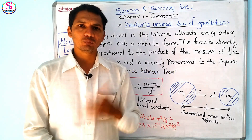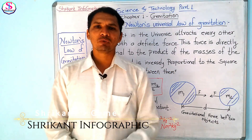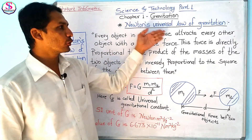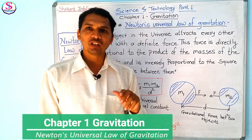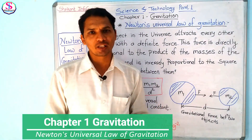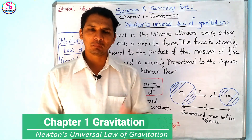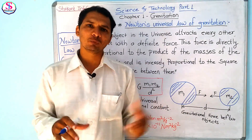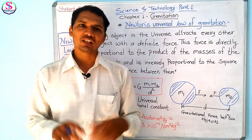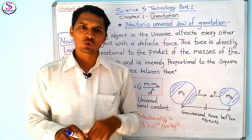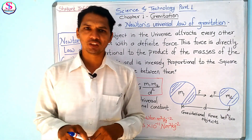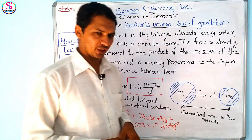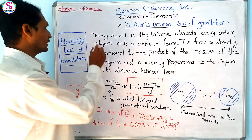Hello and welcome to Srikant Infographic. Today we are going to see Newton's universal law of gravitation. Newton was helped by Johannes Kepler's three laws, which helped Newton a lot to derive the mathematical formula of gravitation and to clarify the concept. So Kepler contributed a lot. Today we are going to see Newton's universal law — what it is and how it was formulated.